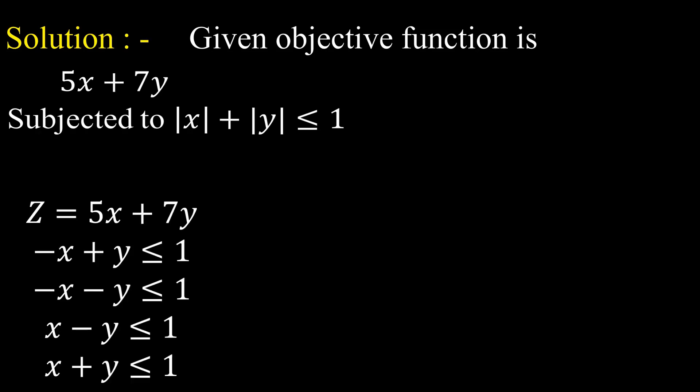Now rewrite the problem: the objective function is z = 5x + 7y, and there are four constraints. This is because |x| has two values, plus x and minus x, and similarly |y| has two values, plus y and minus y. So the constraints are: −x + y ≤ 1, −x − y ≤ 1, x − y ≤ 1, and x + y ≤ 1.